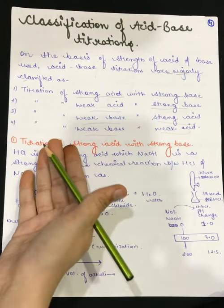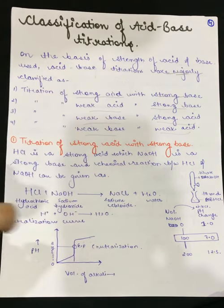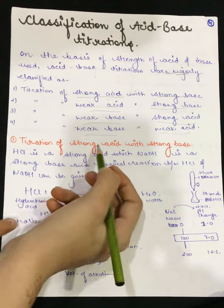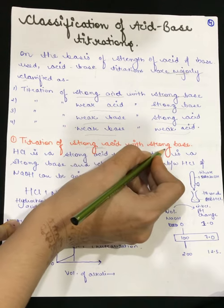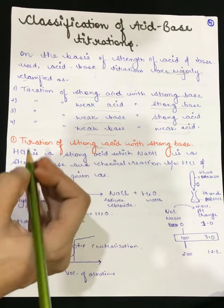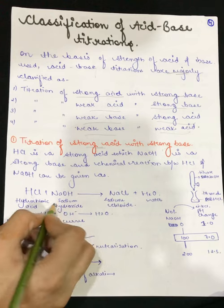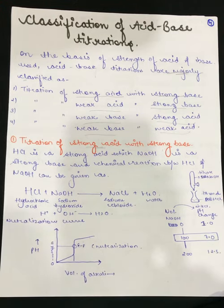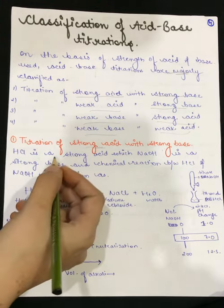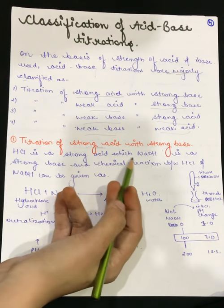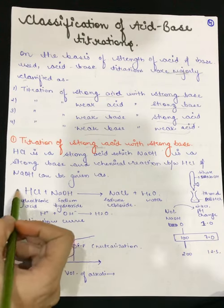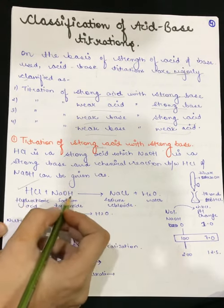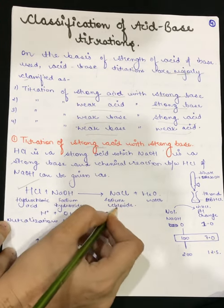First, we have titration of strong acid with strong base. We take a strong acid and react it with a strong base. For example, hydrochloric acid is a strong acid and sodium hydroxide is a strong base. The chemical reaction between hydrochloric acid and sodium hydroxide gives us sodium chloride, which is a salt.